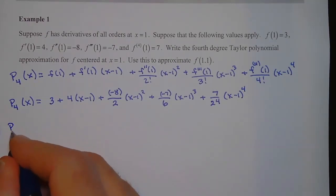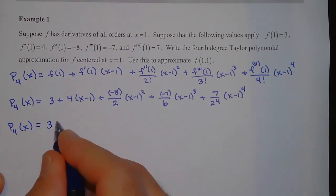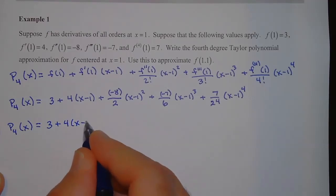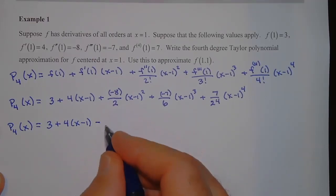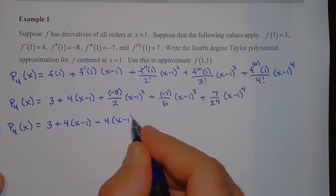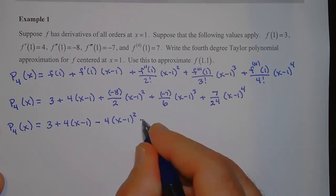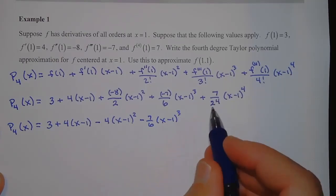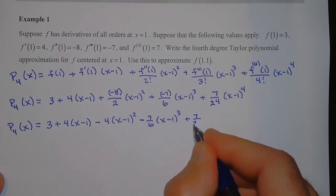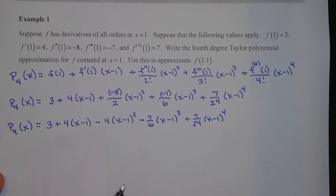The final fourth degree Taylor polynomial is: 3 plus 4(x−1) minus 4(x−1)² minus (7/6)(x−1)³ plus (7/24)(x−1)⁴. This Taylor polynomial approximates the function that satisfies all of those derivative conditions, and we can use it to approximate values very close to the center x equals 1.